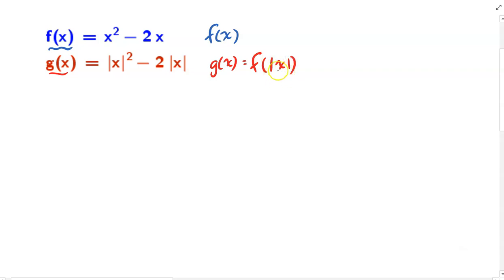So anything we put in there is just being substituted for x. And in this case, we're substituting the absolute value of x for x. So that's what's happening in this function.